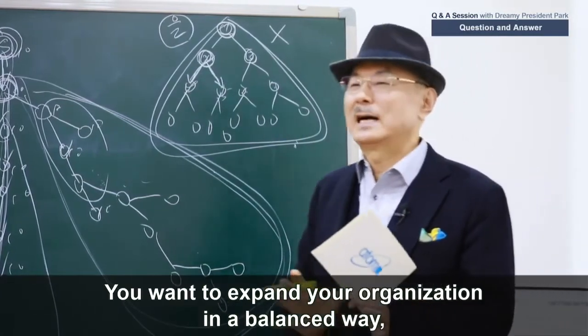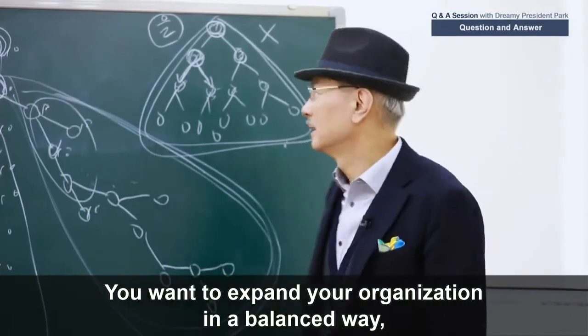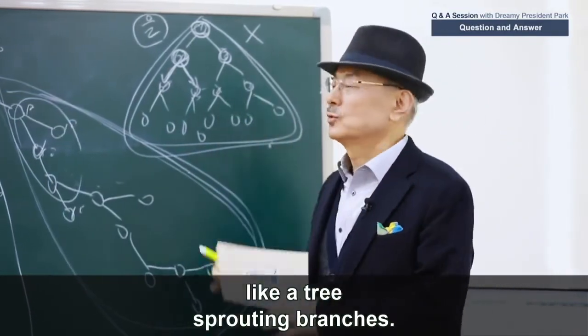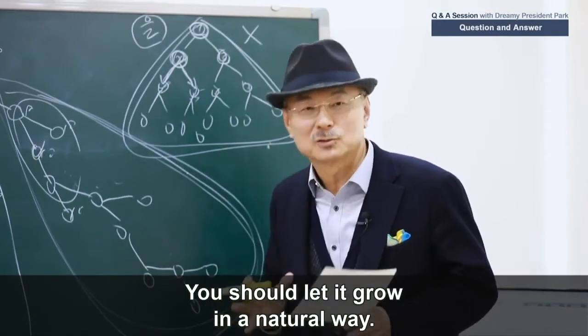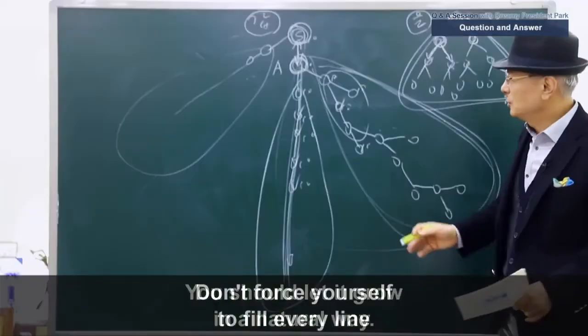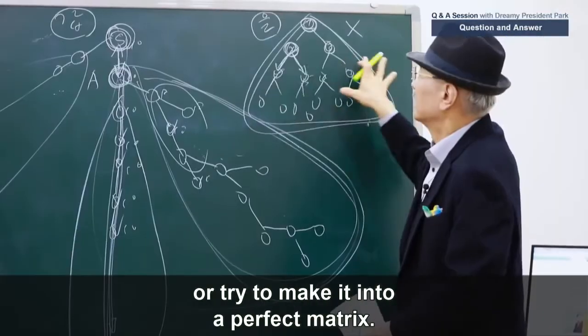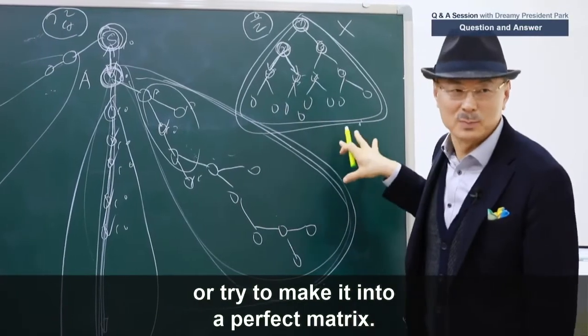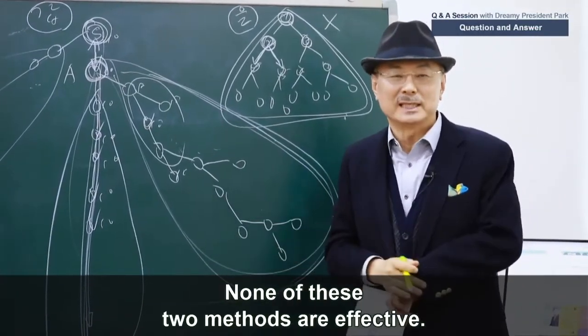You want to expand your organization in a balanced way, like a tree sprouting branches. You should let it grow in a natural way. Don't force yourself to fill every single line or try to make it into a perfect matrix. There's no need for that. None of these two methods are effective.